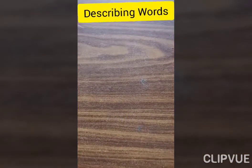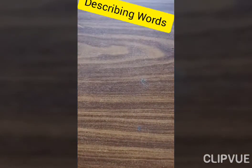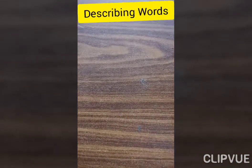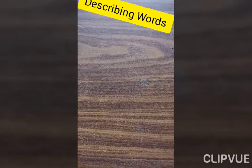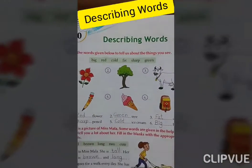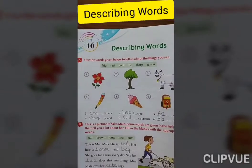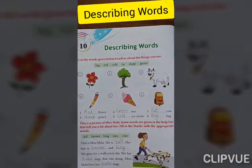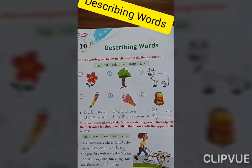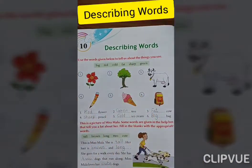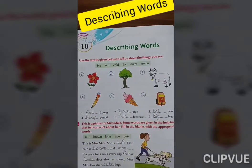So in short, कोई भी चीज़ के बारे में हमें जो आंसर मिलता है, तो उसको हम बोलते हैं describing word. जो वो चीज़ की पहचान है. Lesson number 10 — describing word.